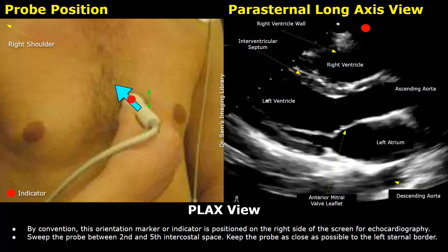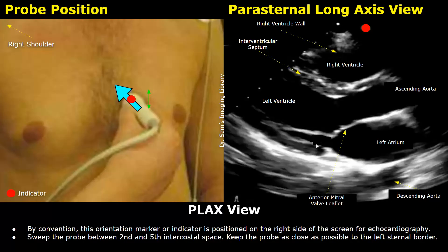The left ventricle is connected to the ascending aorta — this tubular area. The aortic valve is also present here but is not visible in this image because the valve is open. The posterior-most chamber is the left atrium, and the valve between the left atrium and left ventricle is the mitral valve. You can also see the anterior mitral valve leaflet. These linear echogenic structures are the papillary muscles, and this hypoechoic area posterior to the left atrium is the descending thoracic aorta.